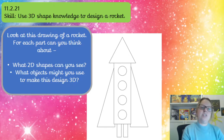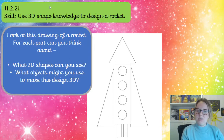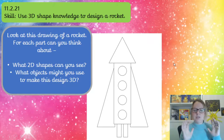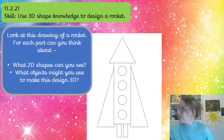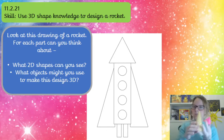So look at this drawing of a rocket. For each part, can you think about what 2D shapes you can see? Those are the flat shapes. And then you need to think about what objects you might use to make this design 3D. So let's have a look at the top — it's a triangle shape, isn't it? So what 3D shape could we create to make that sort of shape but fat?